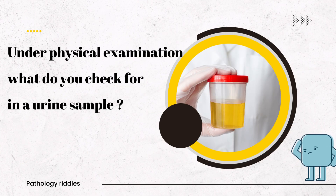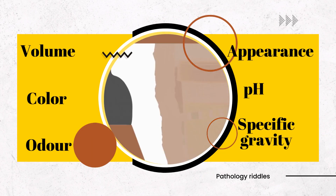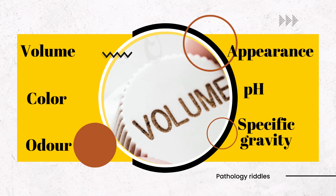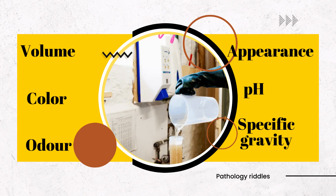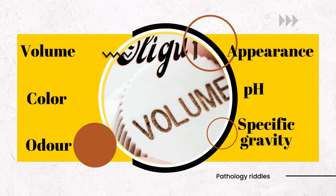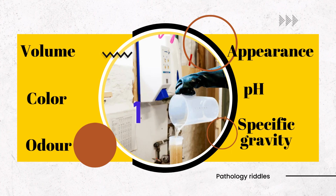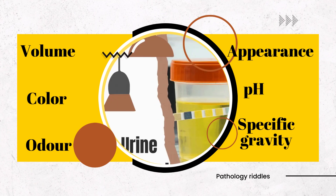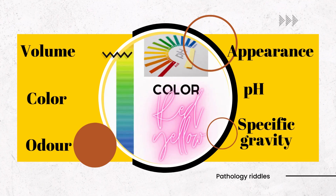Under physical examination, what do you check for in a urine sample? Under physical examination, you have to check for volume, colour, odour, appearance, pH and specific gravity.